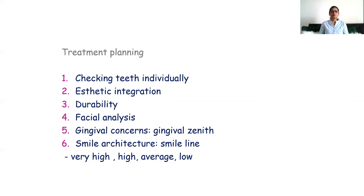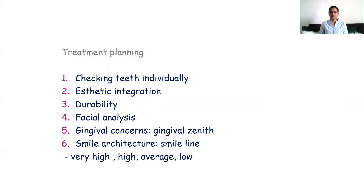Durability is important — in multiple unit cases, the accuracy and durability of the final restoration are especially important, so carefully plan the operational scheme and appropriate smile designing should be done. Facial analysis: dentists should evaluate the facial shape — it can be long, wide, average, or have any irregularity. Then the gingival zenith — the most apical point of the gingival outline should be checked. Then the smile line — it can be high, very high, average, or low.